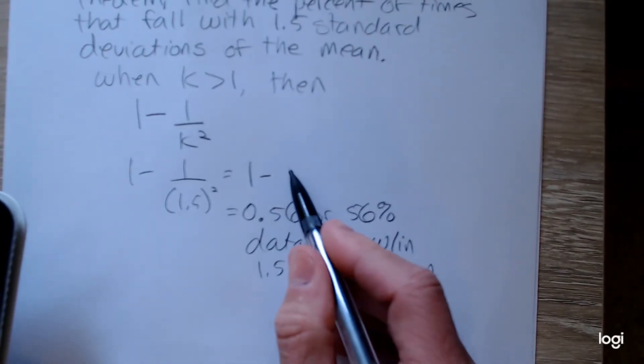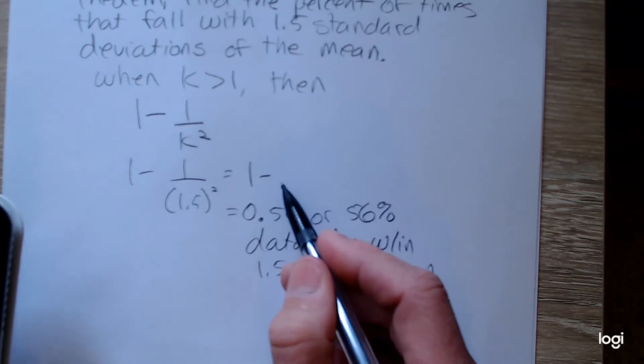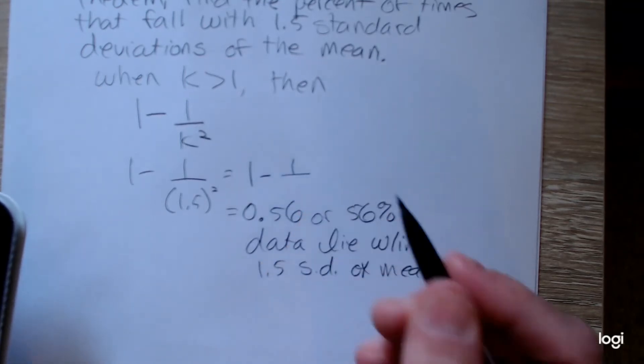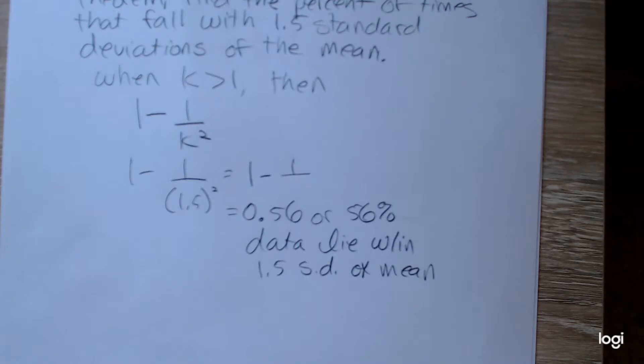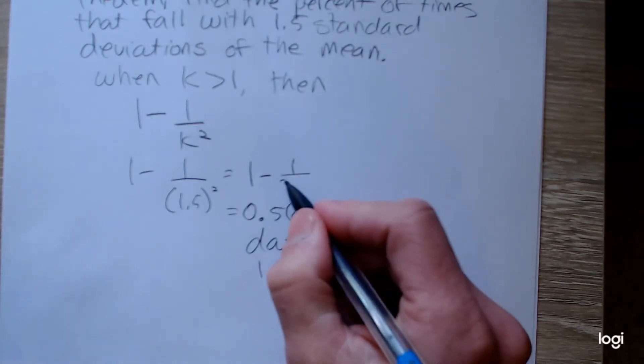If you wanted to fill in this part here, and I apologize for that, this denominator would be, by itself, 2.25.